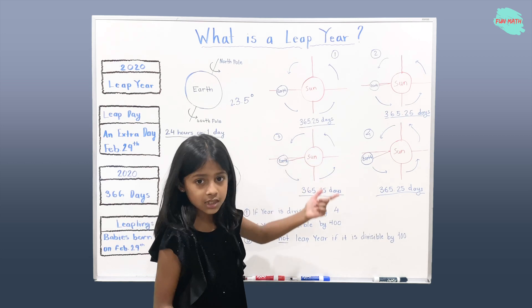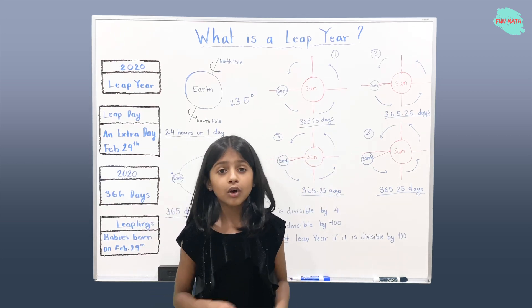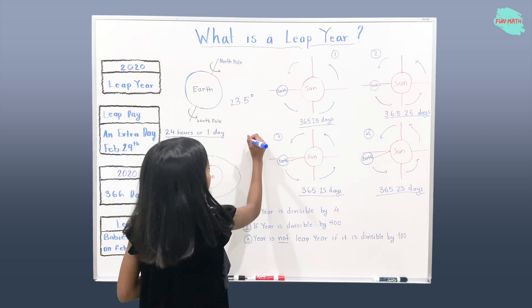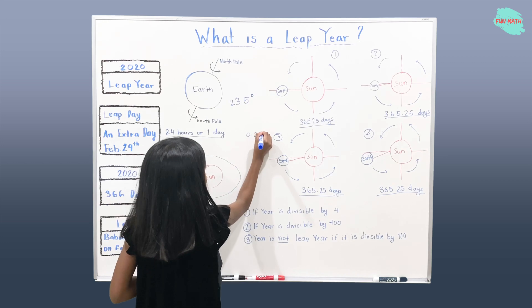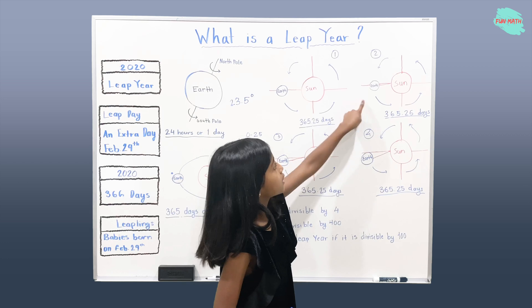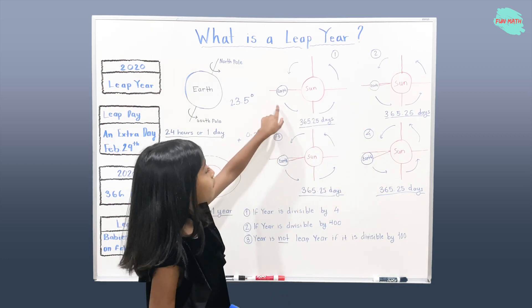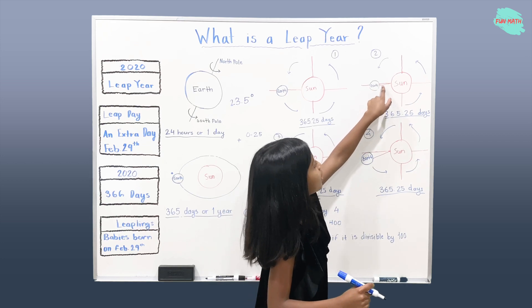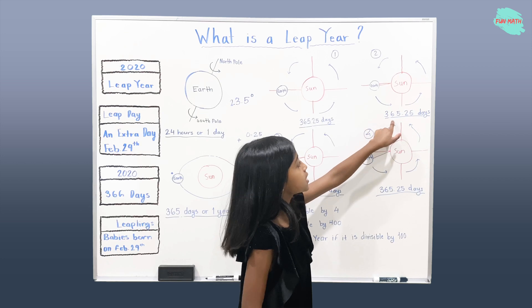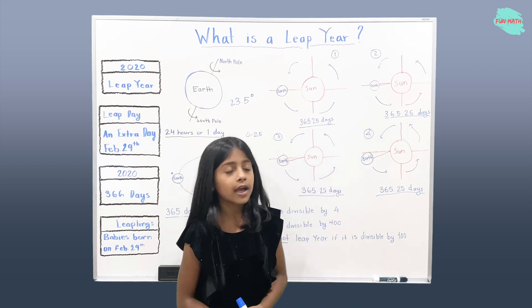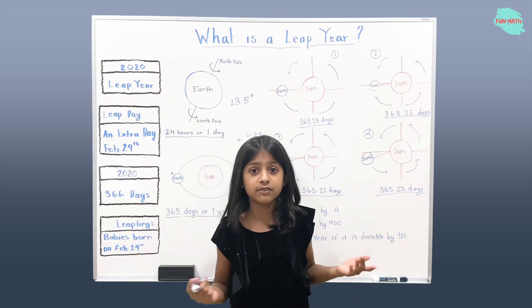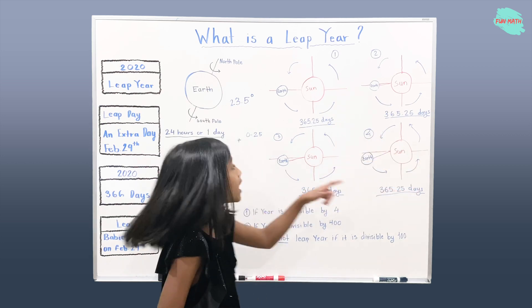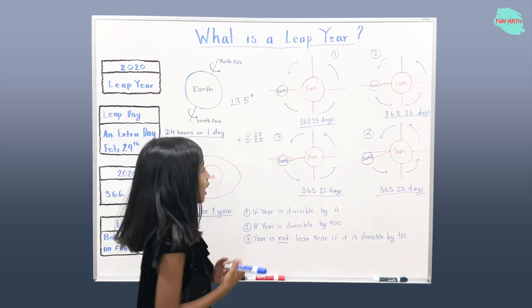That extra 0.25 days — can we add that in the calendar? That's impossible, because it's a quarter. So we write that 0.25 down. In the second diagram, after the Earth orbits the Sun again, it also takes 365.25 days. Again, can 0.25 days go in the calendar? No, it's impossible — it's a quarter as well. So we add that 0.25 days again.